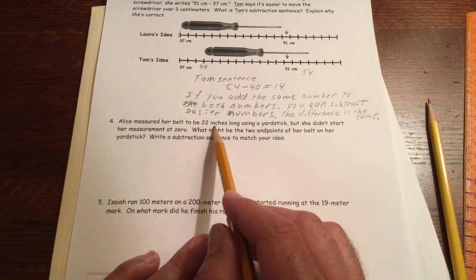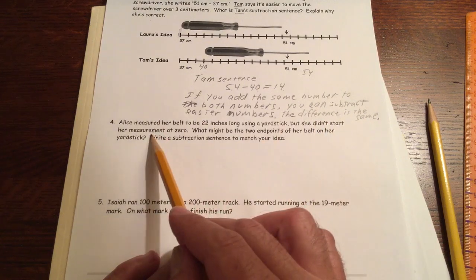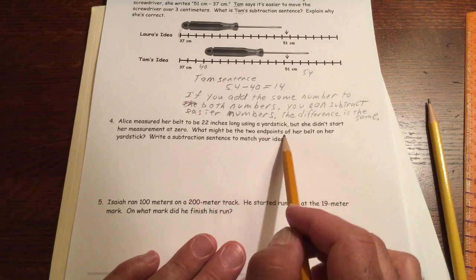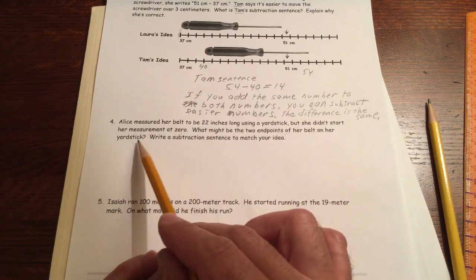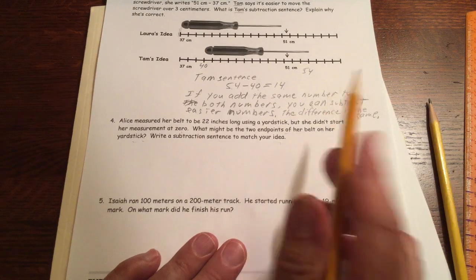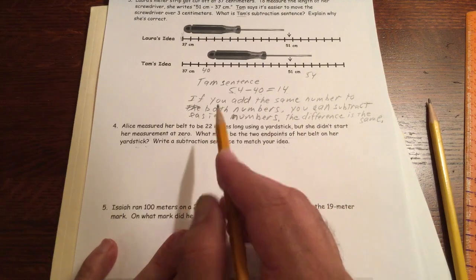Alice measured her belt to be 22 inches long using a yardstick. But she didn't start her measurement at zero. What might be the two end points of her belt on her yardstick? Write a subtraction sentence to match your idea. I got to draw a picture of this.